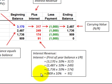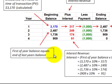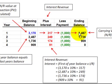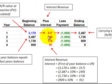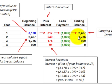Remember: the beginning balance for each year equals the prior year's ending balance. Add the interest earned to the beginning balance, subtract the payment, and you arrive at your new ending balance. This gives us the full amortization schedule for all four years.